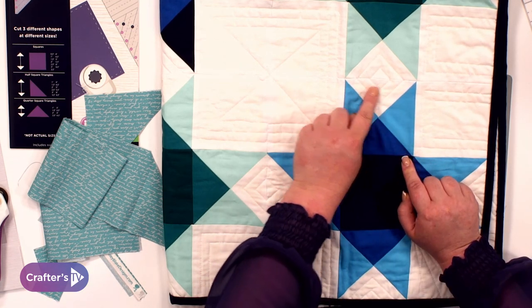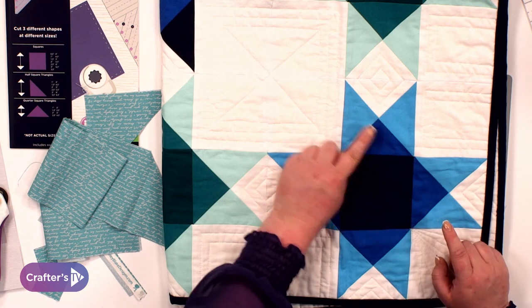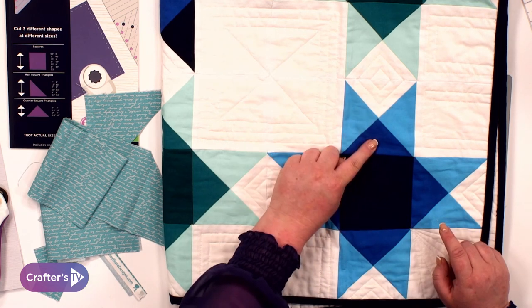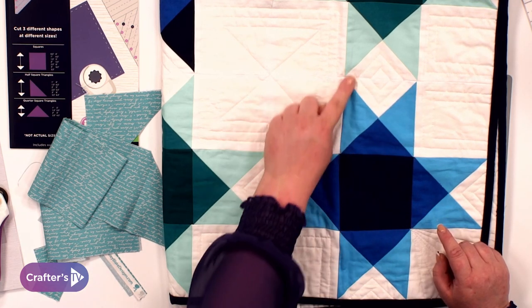Alternatively, you could put a half square triangle in there and add two quarter square triangles onto it. You're still going to make that square.